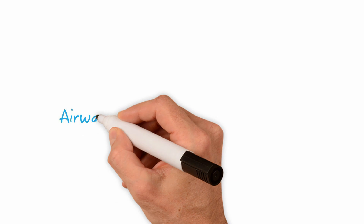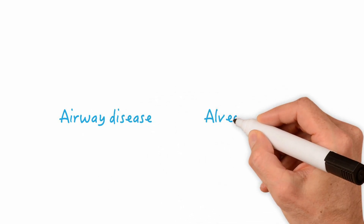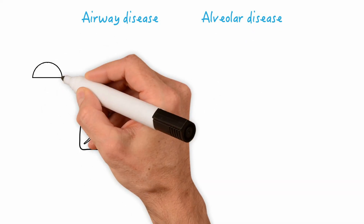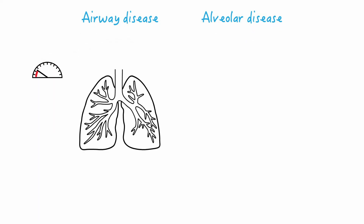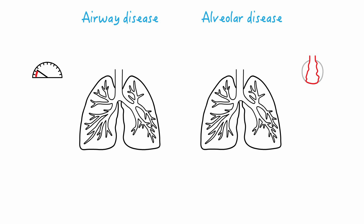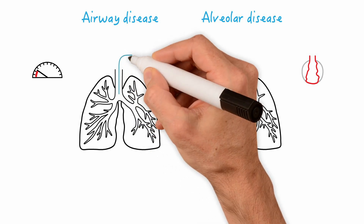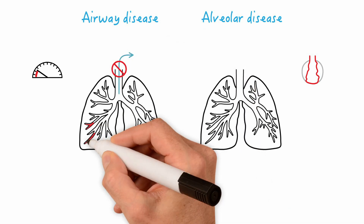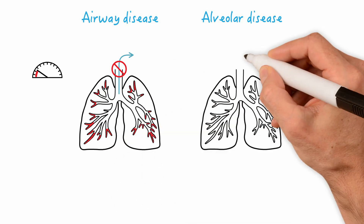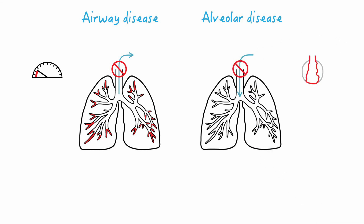Let's recap and do a quick side-by-side comparison of the two general categories of lung disease. In airway disease, the speed of air flowing in and out is decreased. With alveolar disease, it's not an airway issue — it's a matter of collapsed alveoli not able to open to receive volume; therefore, volume entering the lung will be decreased. In airway disease, the patient will have difficulty getting volume out, which leads to air being trapped in the alveoli. In alveolar disease, the patient will have difficulty getting volume in due to collapsed alveoli.